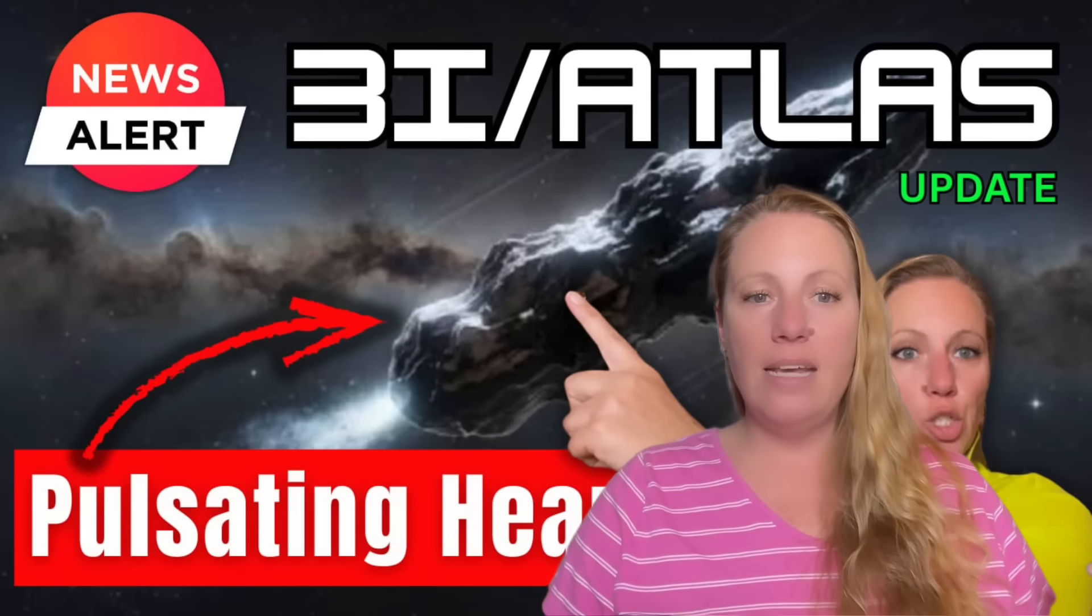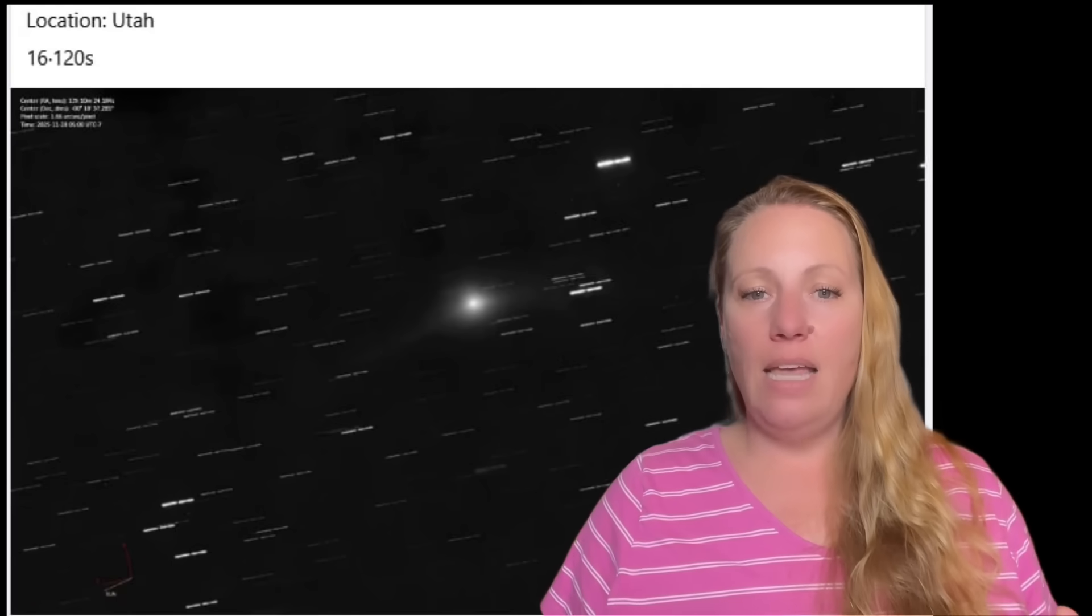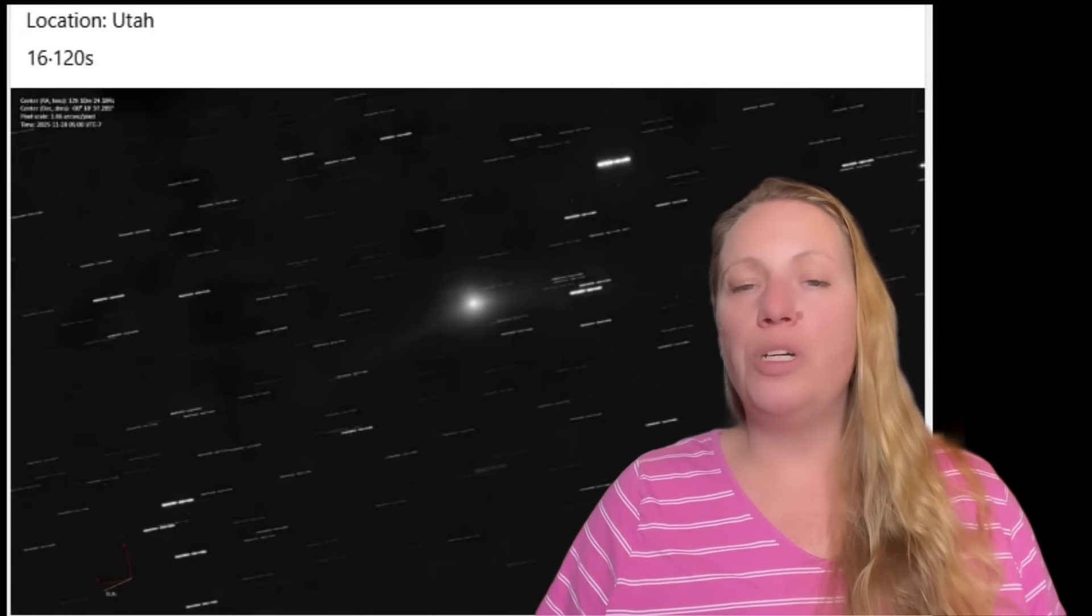But we know Avi Loeb points out things that don't fit so nicely into that explanation. We talked about this in my last video. A heartbeat-like pulse in the brightness. A very strong non-gravitational acceleration. A tail that might actually be made out of swarms of objects.